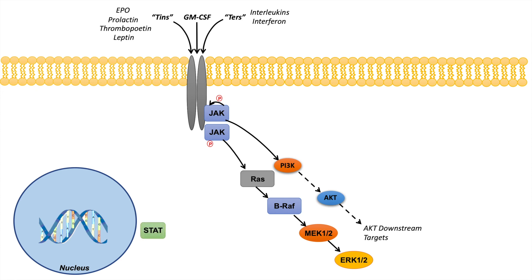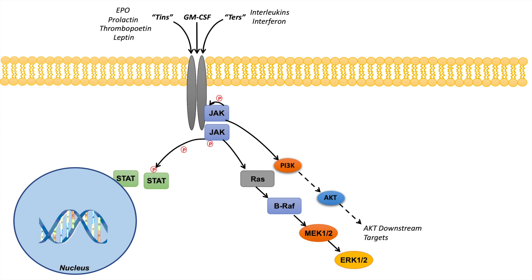JAK also recruits the protein known as STAT, and phosphorylates it. When STAT is phosphorylated, it recruits other STAT proteins, leading to homodimerization of STAT. Those homodimers can then enter the nucleus and bind to gamma-activated sequence elements, or GAS elements, in the nucleus, leading to transcription and induction of gene expression involved in cell survival.